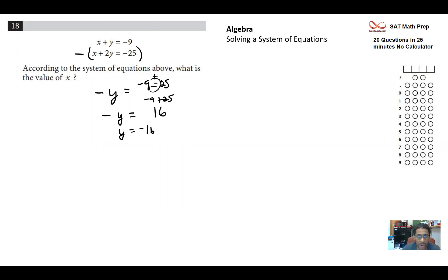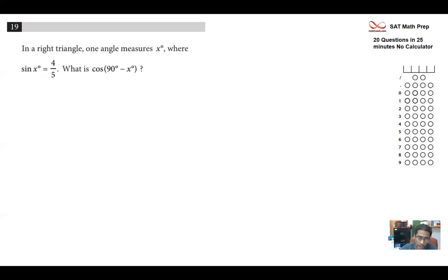Negative y equals 16, or y is negative 16. But they're not asking us for y. They're asking us for x. And so what we do, go back to either equation, x plus y equals negative 9. That's a good one. Knowing that y is negative 16. And we just add over the 16. And we get that x is equal to 7. That's going to be a quick one, although it's later in the list. This seems out of place, this question.